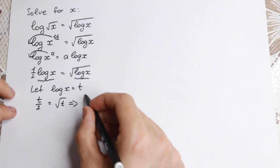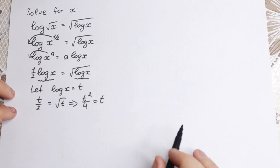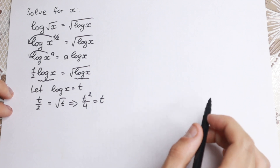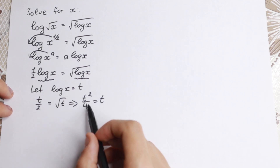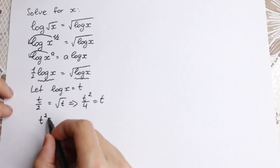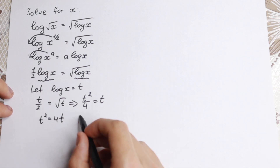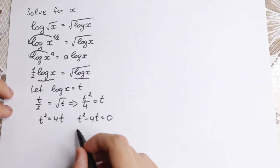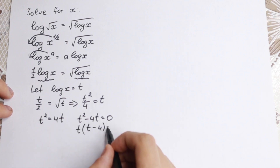The equation becomes t over 2 equal to square root of t. Now let's square both sides. We will have t squared over 4 equal to t. Multiplying both sides (cross-multiplying), we get t squared equal to 4t. Bringing 4t to the left: t squared minus 4t equals 0.